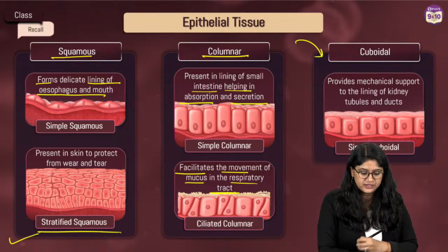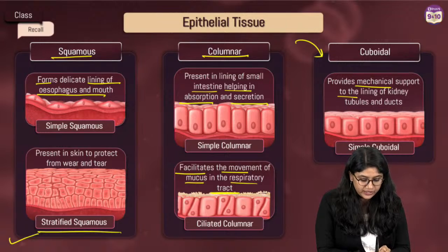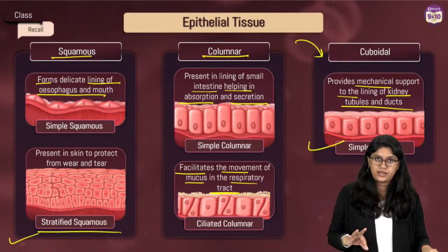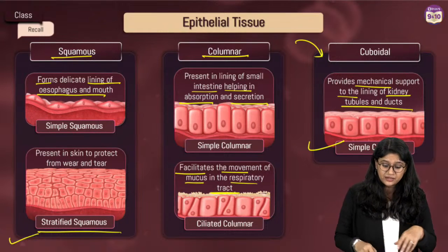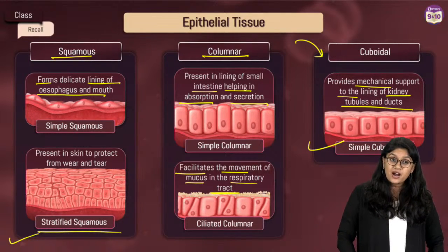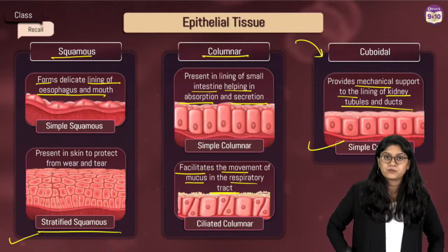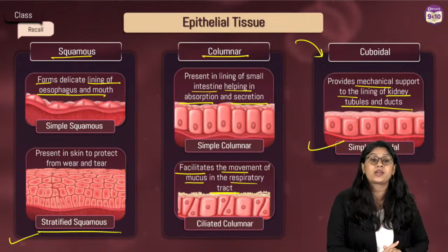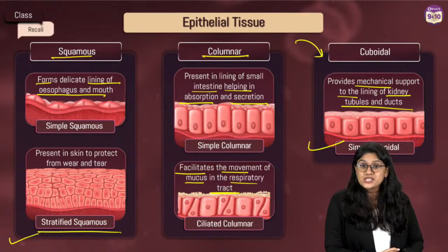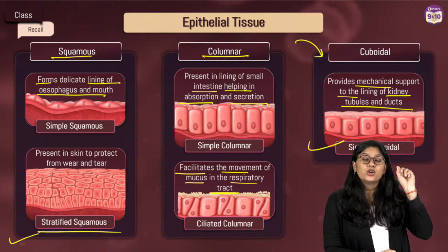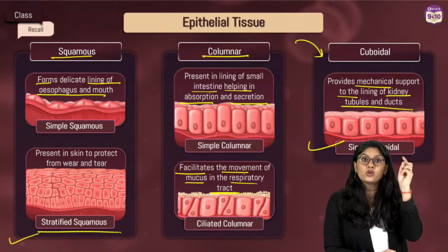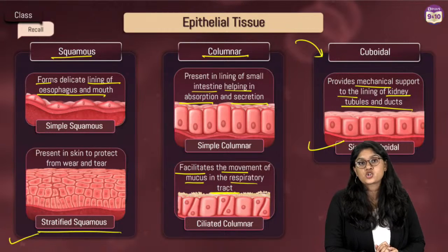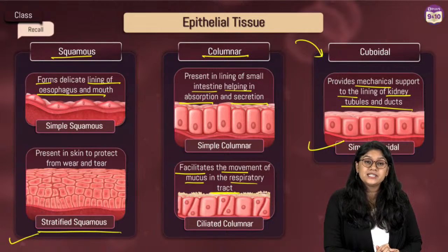Cuboidal epithelium provides mechanical support to the lining of the kidneys, tubules, and ducts. In your examination, one common question on epithelial tissue will ask about the location. In MCQs, they can give you the location and ask you to identify which tissue is present there. Please make sure to remember the examples.